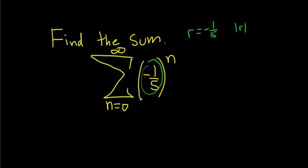If you take the absolute value of r, you get 1/5, and that's less than 1. That means that the series converges by the geometric series test.